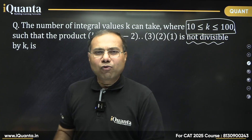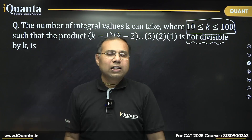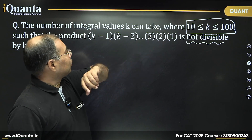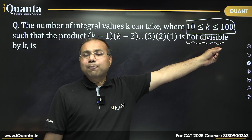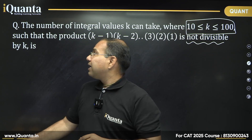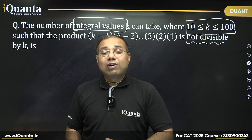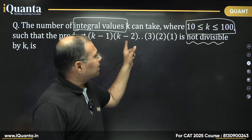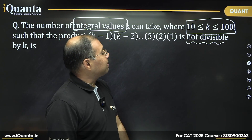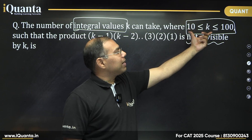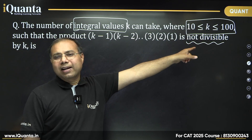We should be very, very careful — it is NOT divisible. I need to keep this in mind. This product should not be divisible by k. We have to find such values of k within that range. How many integral values can k take? Since the range is given as 10 to 100, k is certainly a positive integer — no confusion there. I want k in this range, and this product should not be divisible by k.